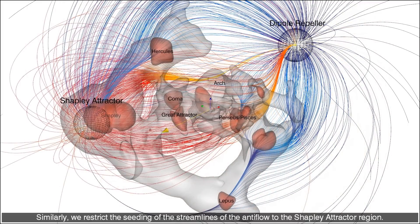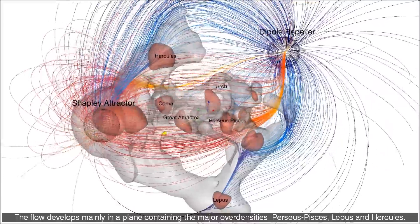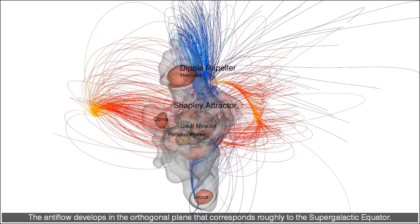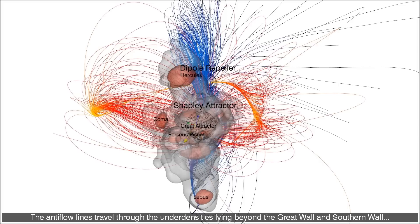Similarly, we restrict the seeding of the streamlines of the antiflow to the Shapley attractor region. The flow develops mainly in a plane containing the major overdensities: Perseus Pisces, Lepus and Hercules. The antiflow develops in the orthogonal plane that corresponds roughly to the supergalactic equator. The antiflow lines travel through the under densities lying beyond the Great Wall and southern wall, on their way to the region of lowest density, the dipole repeller.